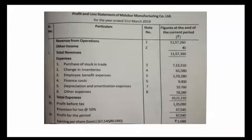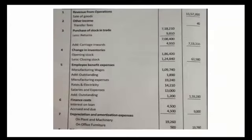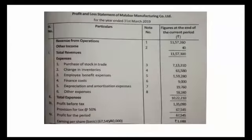Depreciation and amortization expenses — Note No. 7. Depreciation on plant and machinery: value is 1,28,400, and 15% depreciation is 19,260. Office furniture depreciation is 500. Total depreciation is 19,760.